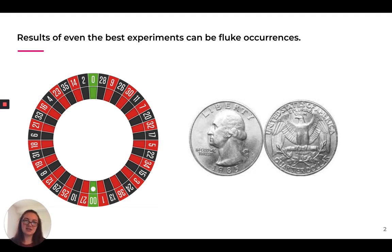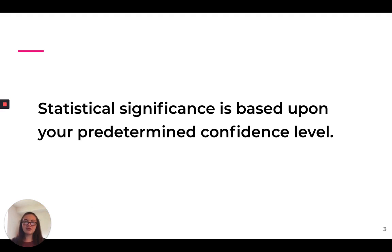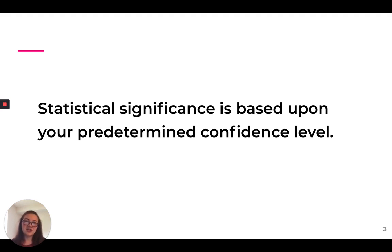We wouldn't want to implement something that isn't exactly accurate or doesn't represent the entire population. So before you run any test, you're going to want to set a confidence interval. A lot of times the industry standard is 95%, which means at the end of the results you need to be 95% confident that the results you achieved were because of the variable you influenced — not because of chance.